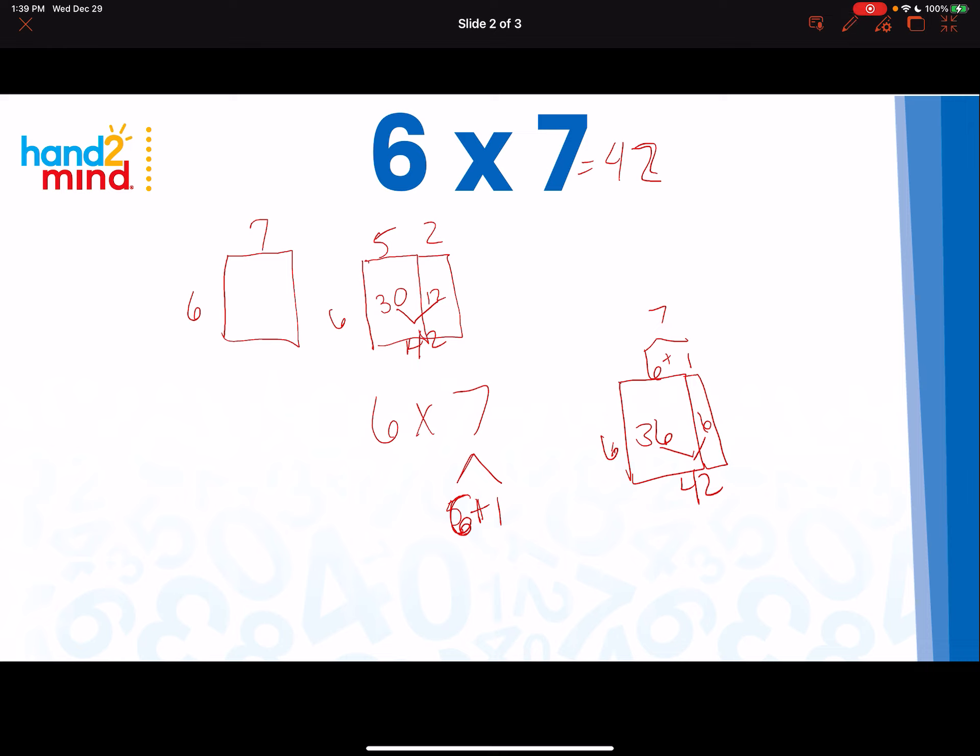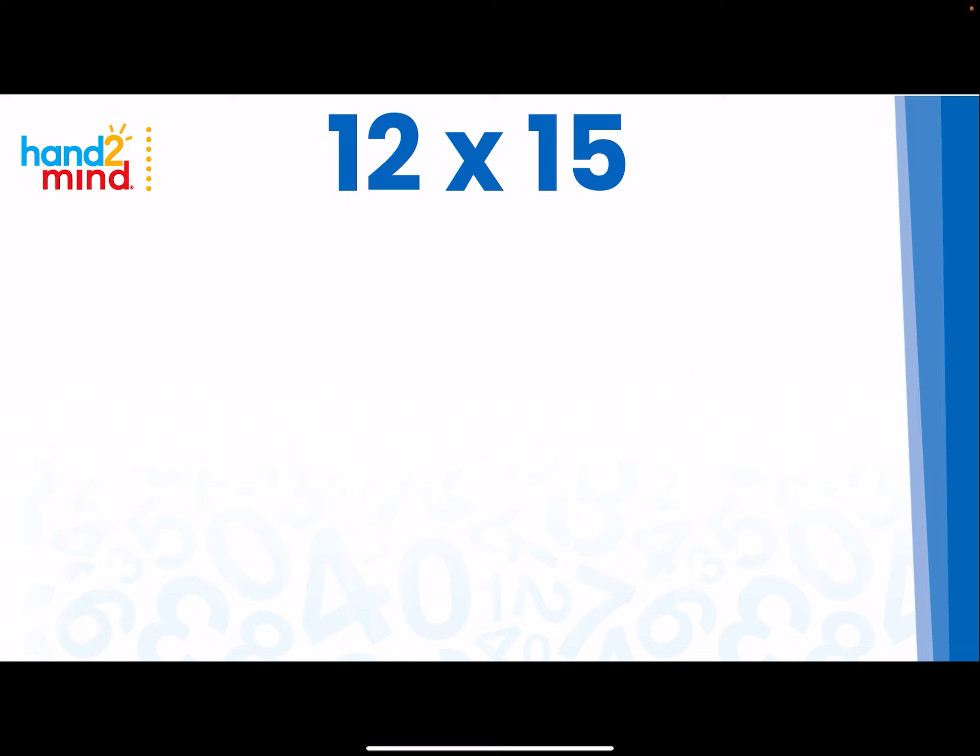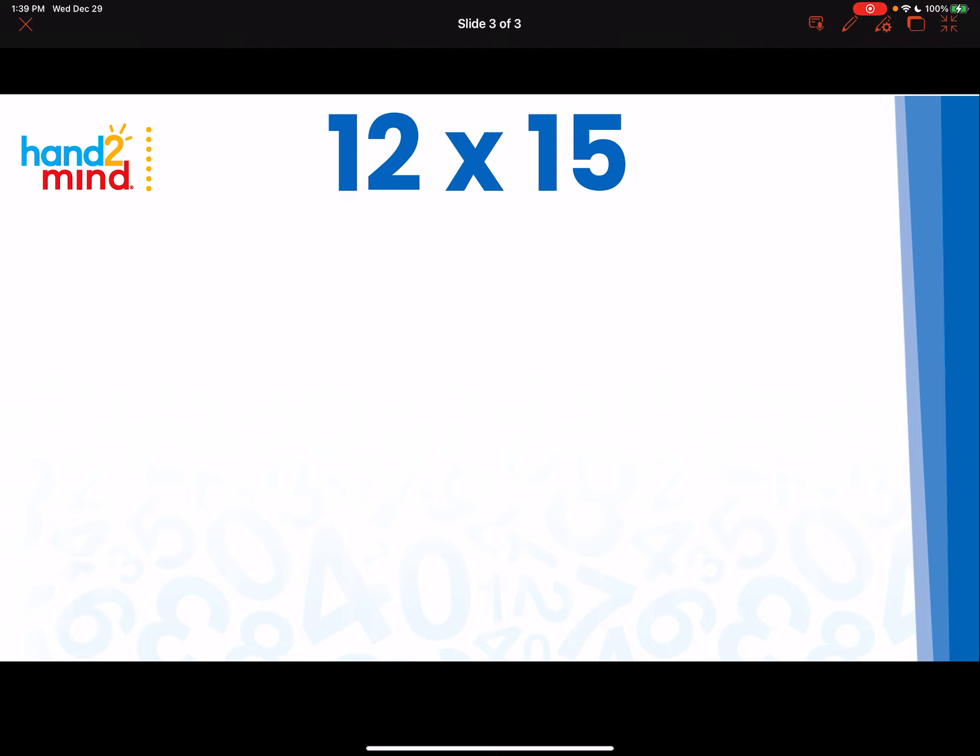Now, let's look at it using a 2-digit by 2-digit. So again, the idea here would be always try, if possible, to keep one of these factors whole. So maybe I want to keep this whole but I want to decompose this into add-ins that might be easier to multiply with.